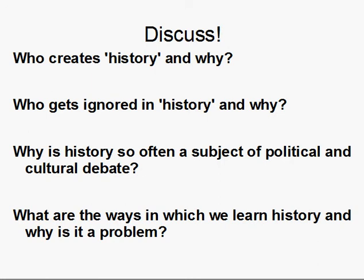Famous writer George Orwell said that he who controls the past controls the future. Who gets ignored in history? Throughout much of our existence, history tended to ignore people who were, in some ways, oppressed — who didn't have the power in society to change things for the better. Women were ignored throughout much of human history. Oppressed people like slaves and servants were ignored. Workers and other minorities — whether ethnic, sexual, or religious — were ignored. That is a problem, and it is one of the reasons why history is so often a subject of political and cultural debate. Countries also use past history to justify conflicts quite often.